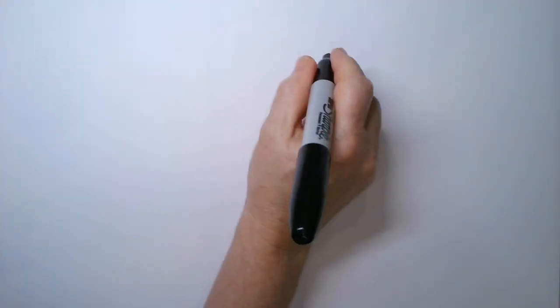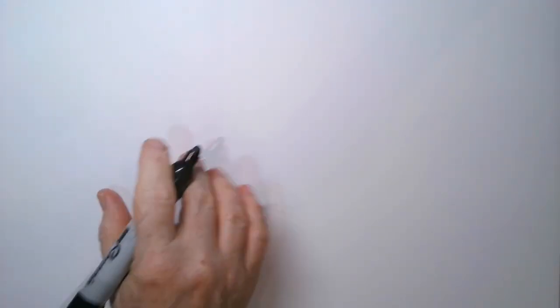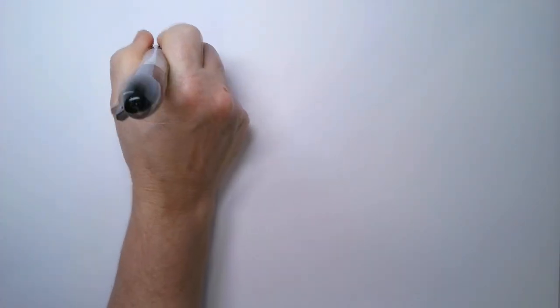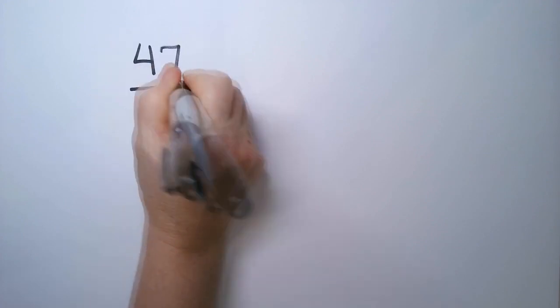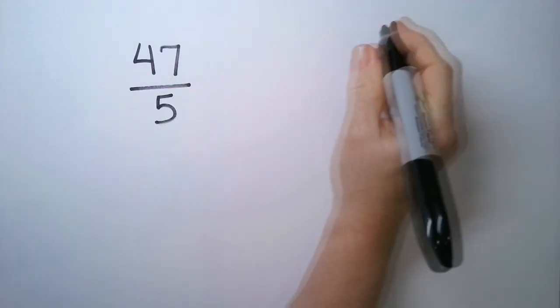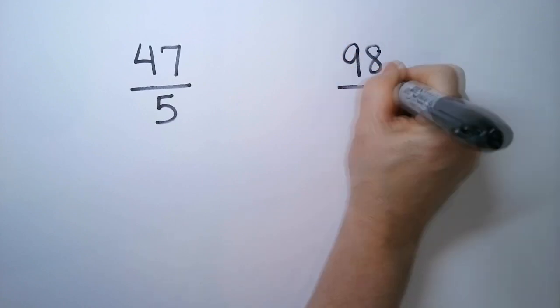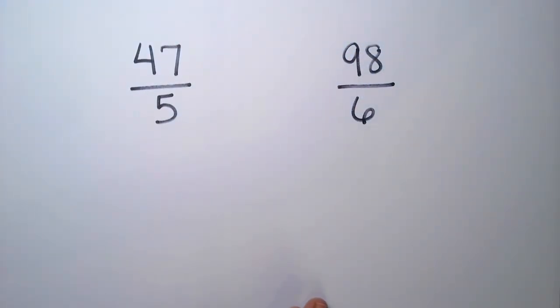Let's do something different. I'm going to put two improper fractions, and I'm going to do them both, and I'm going to see if you can beat me to the answer on either one. So you get to take your pick. So I have 47 divided by 5, and I also have 98 divided by 6.